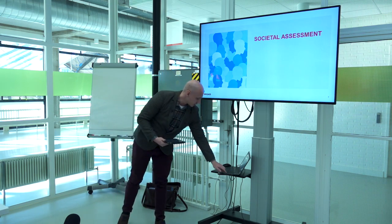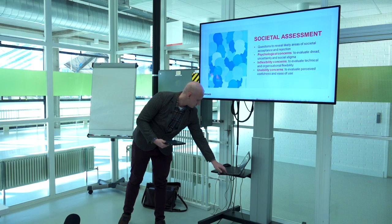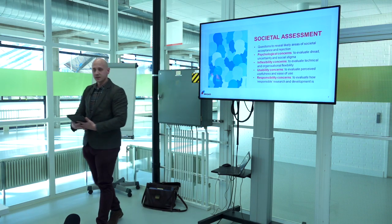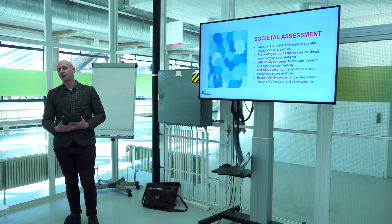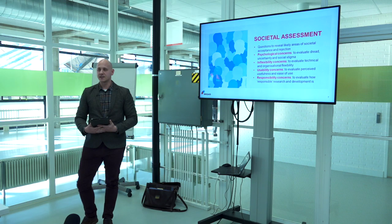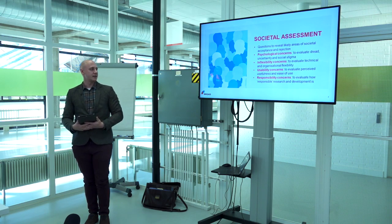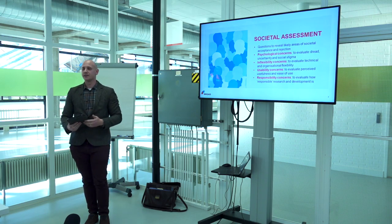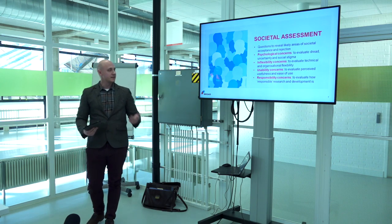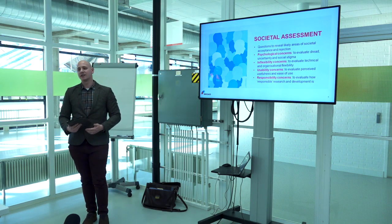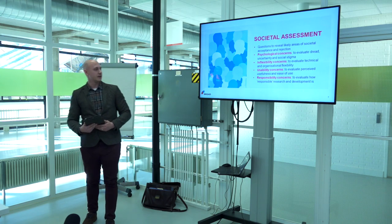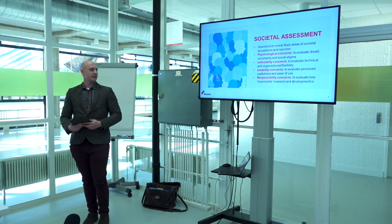There are four sections within the societal assessment. First, psychological concerns: feelings of dread and uncertainty, social stigma. Second, inflexibility concerns: can the technology be removed if there's a problem? Is it permanent? Is it going to change the lives of the people that use it? Third, usability concerns: is it going to be useful and easy to use? With some of the tube barriers, that was a concern quite early on in development.